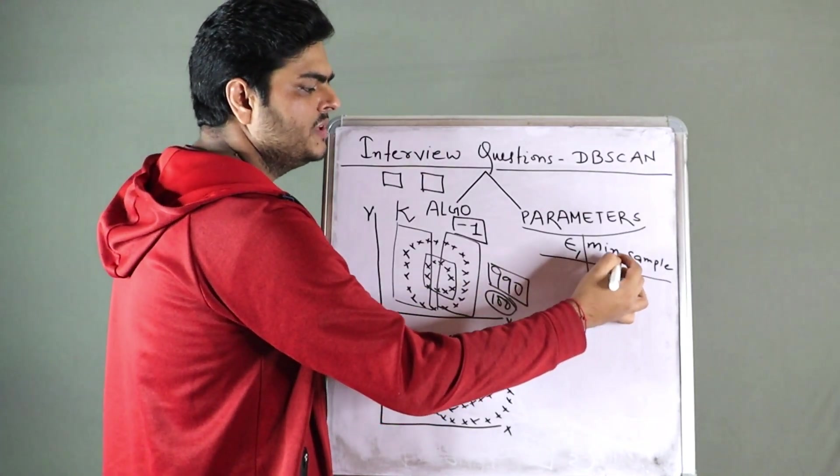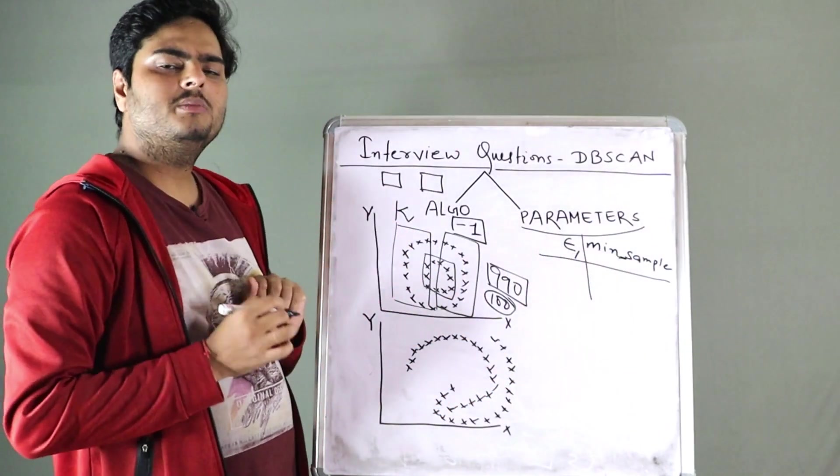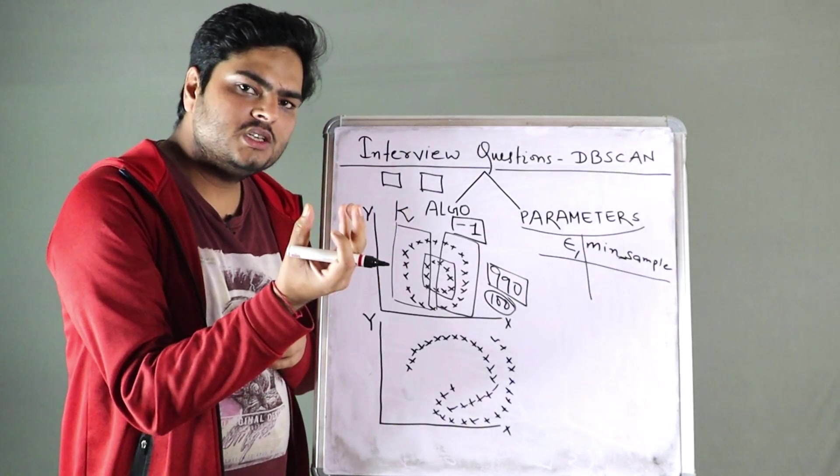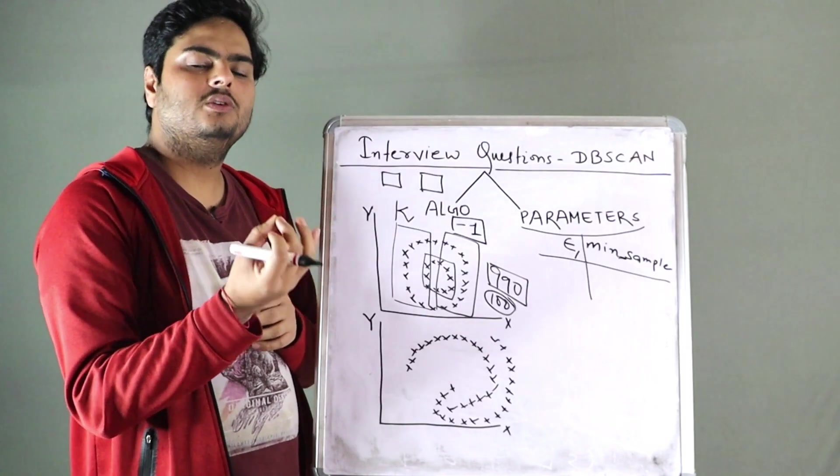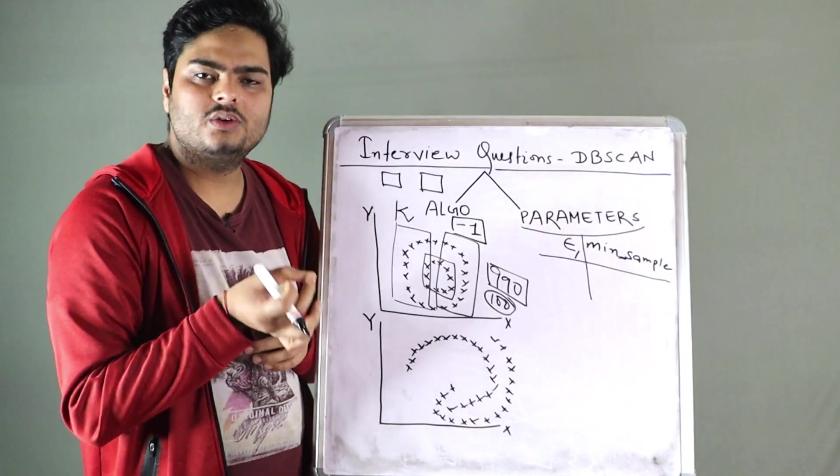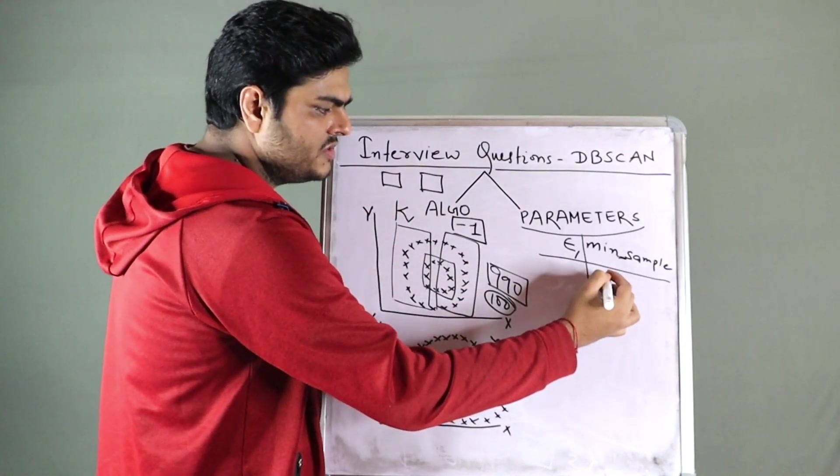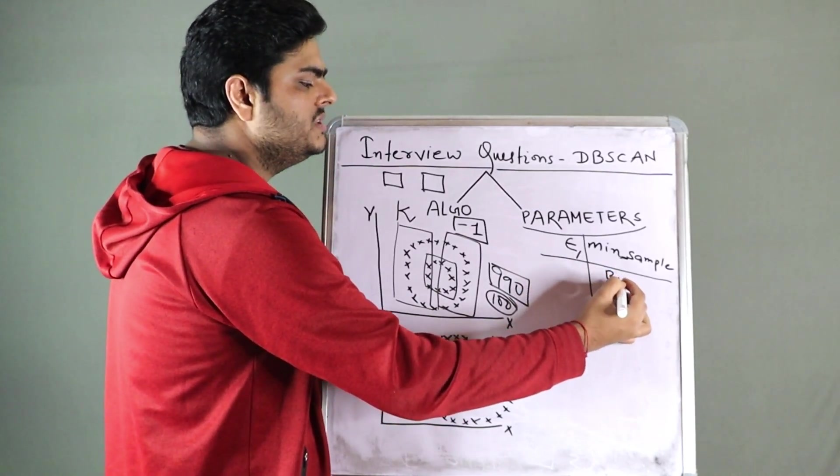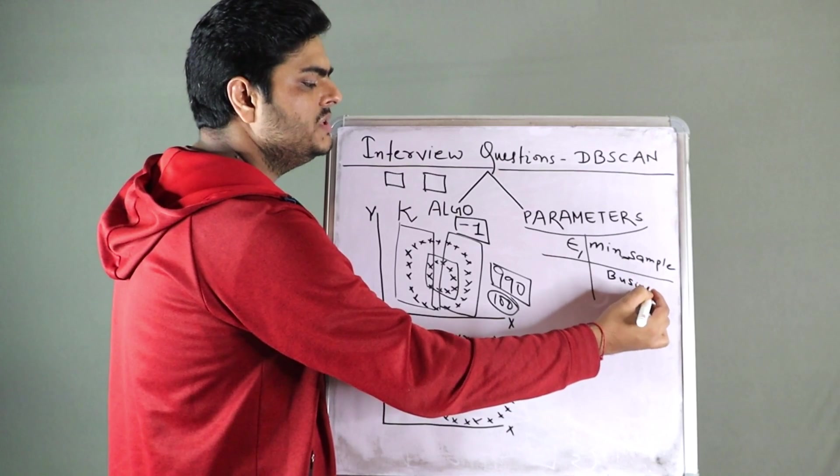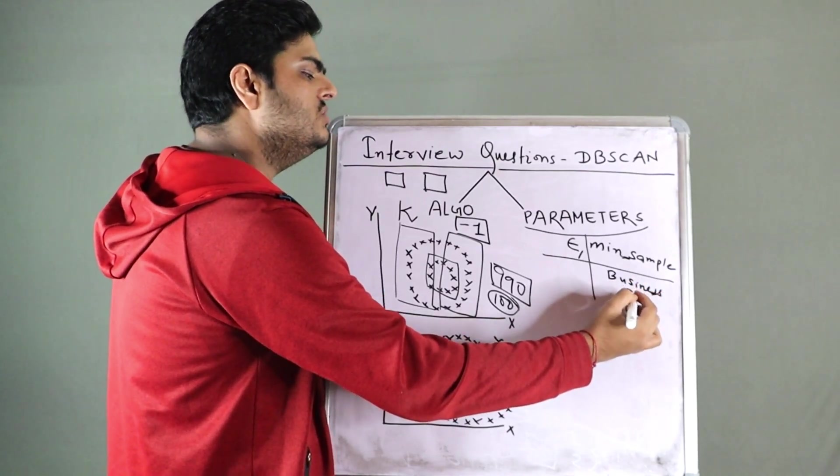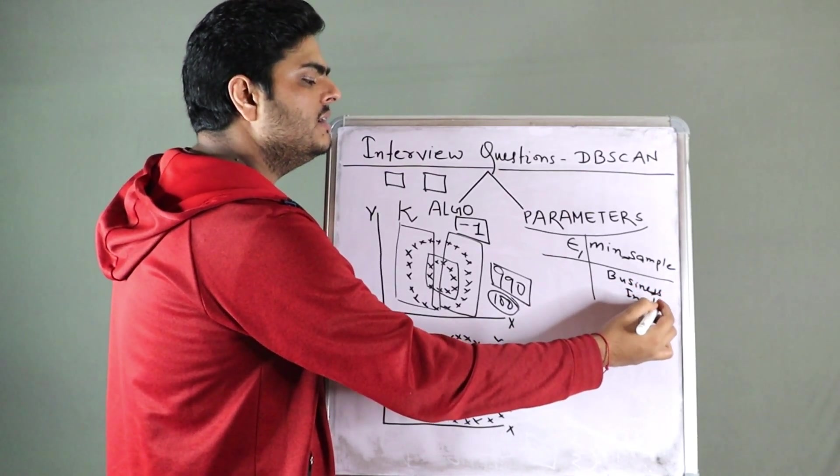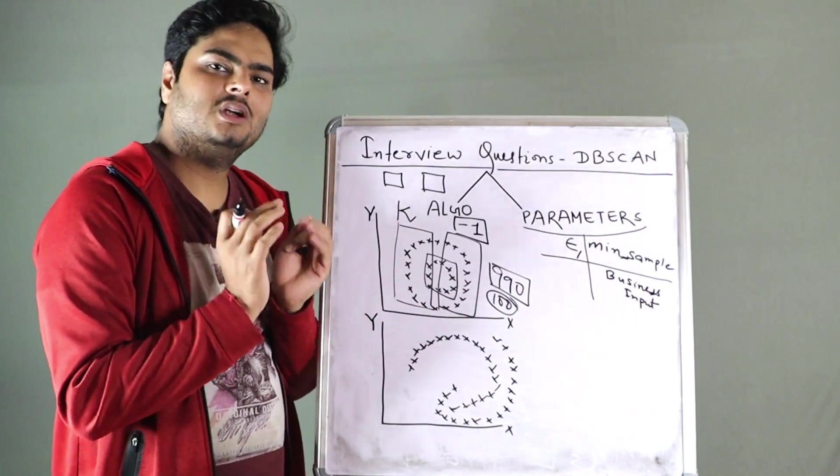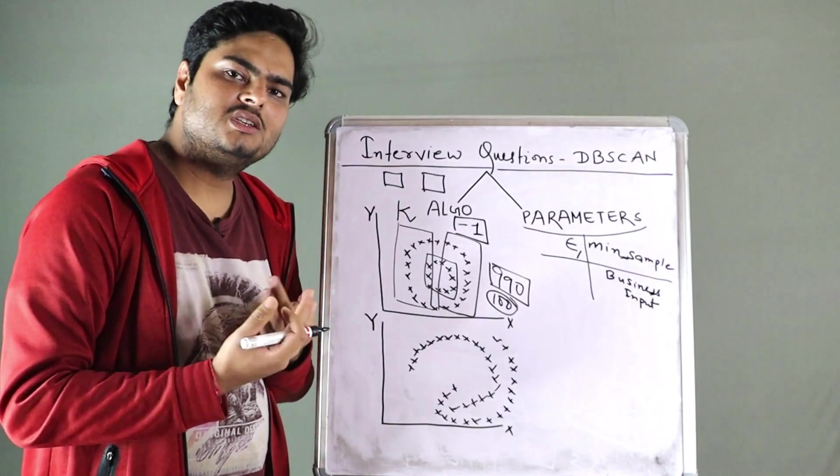First of all, minimum number of sample. So this parameter is nothing but in your cluster, how many minimum data points together as a group you want to call as core points or, you know, nearby point to the core point. First is, you should talk like this in the interview. You might need a business input. You might need a business input. Because you do not know what might be the, you know, nearby people to that people or nearby product to that product.